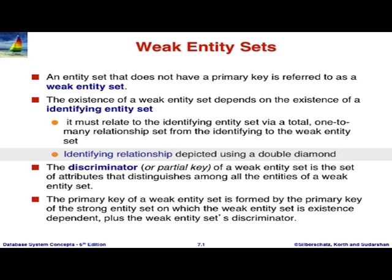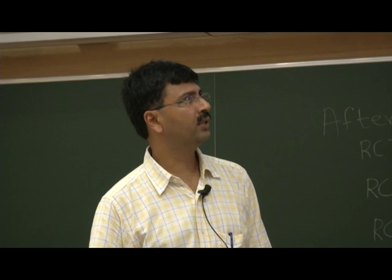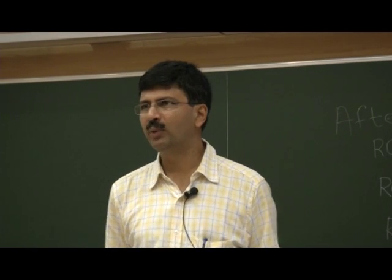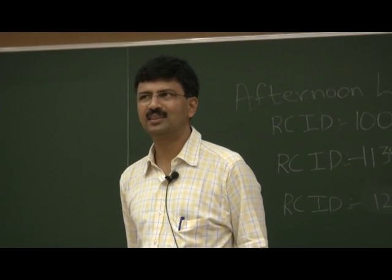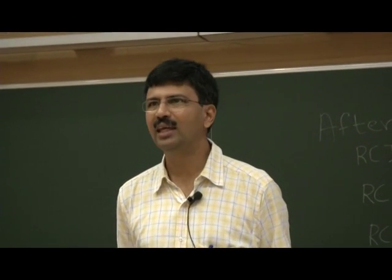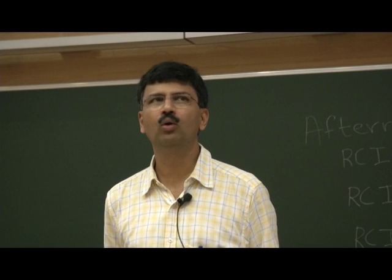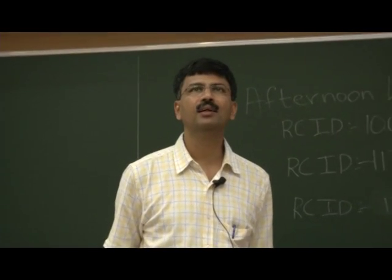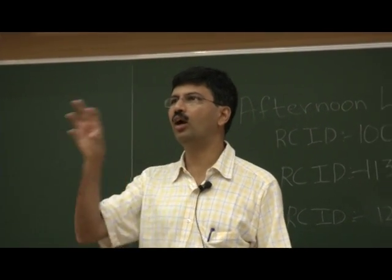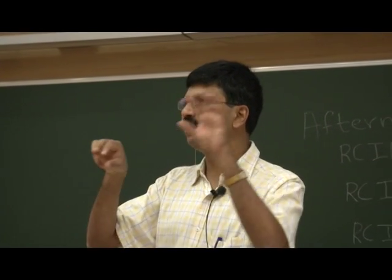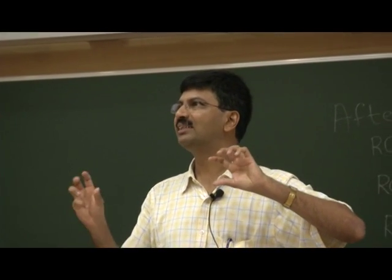The identifying relationship is depicted with a double diamond, and a discriminator - also called a partial key - is part of the primary key. The actual primary key is formed by the primary key of the strong entity set, or identifying entity set, on which the weak entity set is called existence dependent. This brings up another issue: in addition to the notational issue of should it have a primary key, there is a deeper issue which says that a section cannot exist without a corresponding course. This is an existence dependency - the entity is existence dependent upon the other entity and cannot exist by itself.